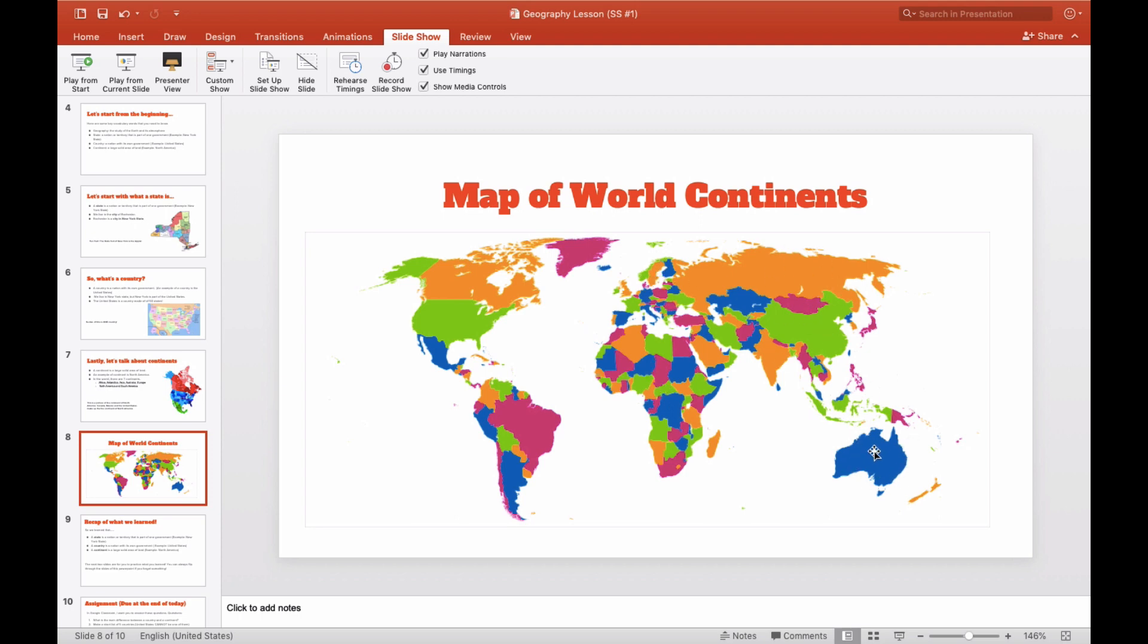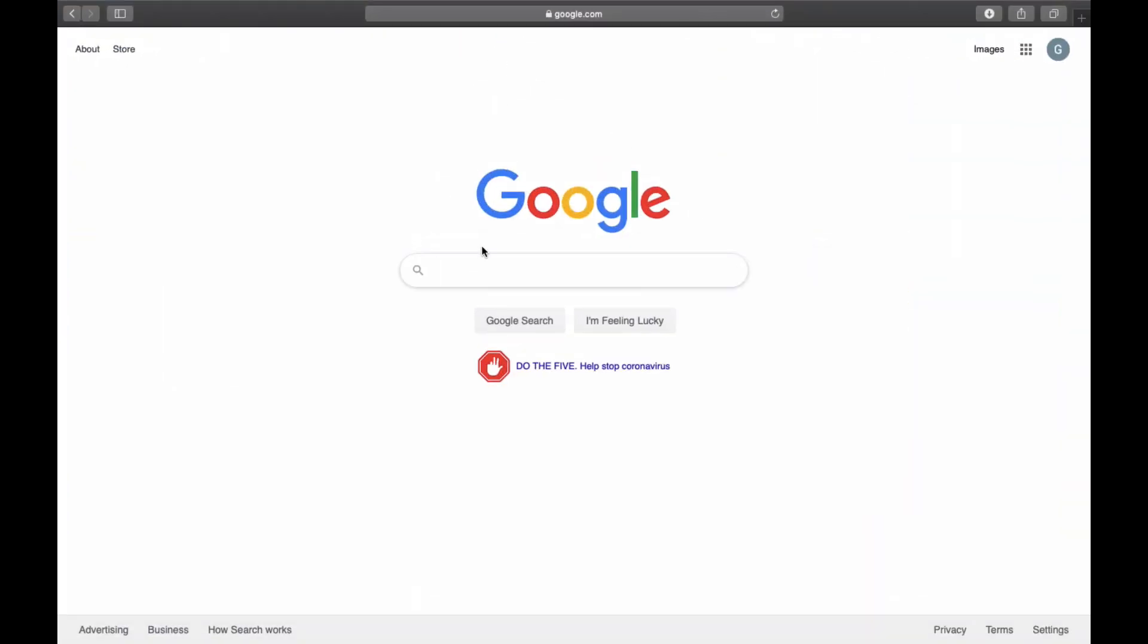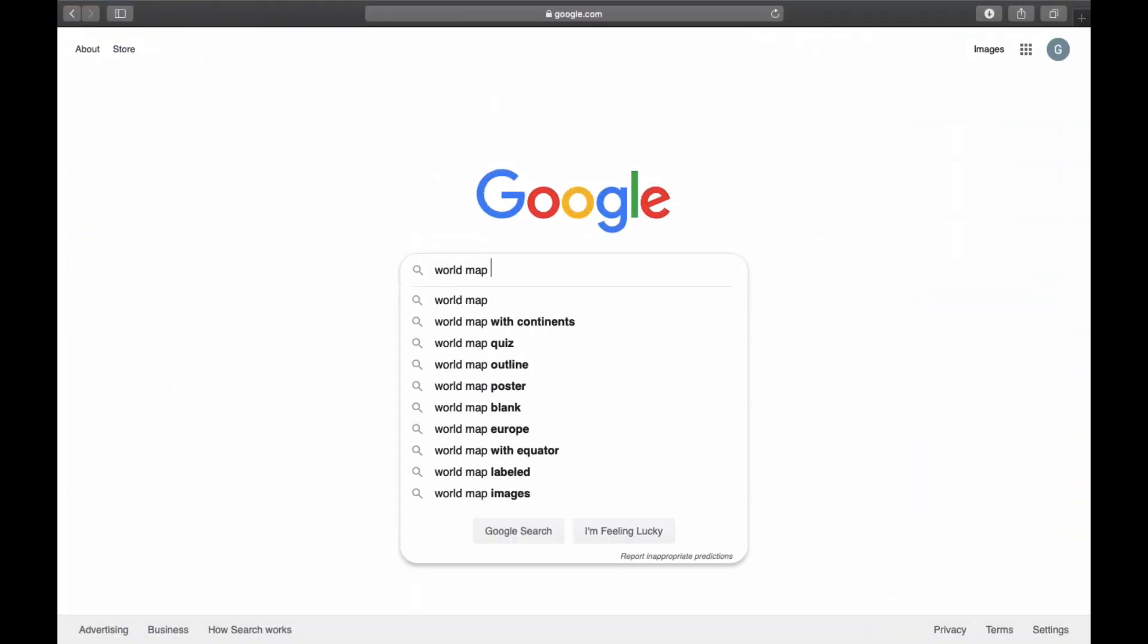So one, two, three, four, five, six. And I forgot to say Antarctica. I don't know why Antarctica is not here. Let's fix that. Let's look up world map.